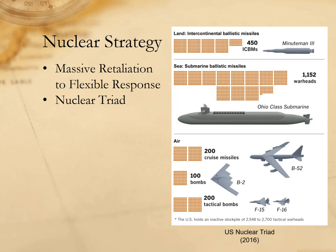The idea of the triad was that each leg should independently be able to impose unacceptable damage on the Soviet Union — if two legs were destroyed, the third could still retaliate. Each leg also compensated for the weaknesses of the others: strategic bombers were vulnerable but could be recalled if a strike was called off; ICBMs were more secure but vulnerable to a Soviet first strike; SLBMs were hidden but submarines were difficult to communicate with, and their missiles were generally less accurate than land-based counterparts.